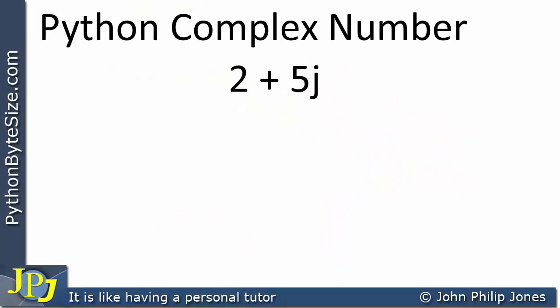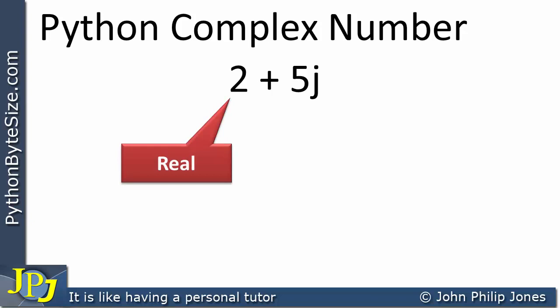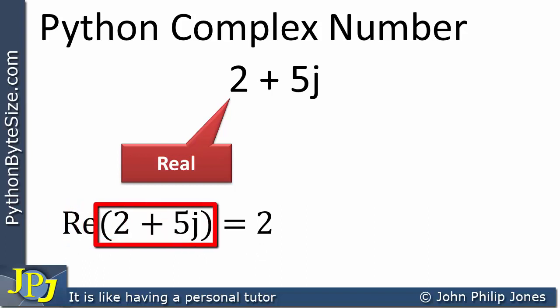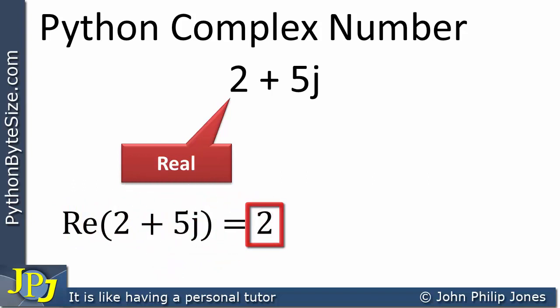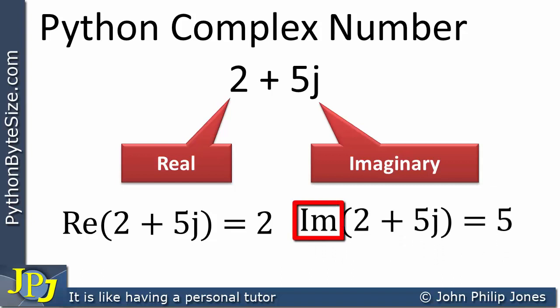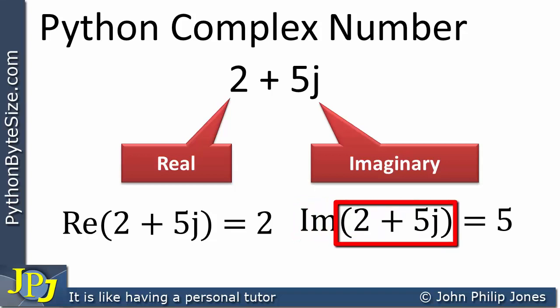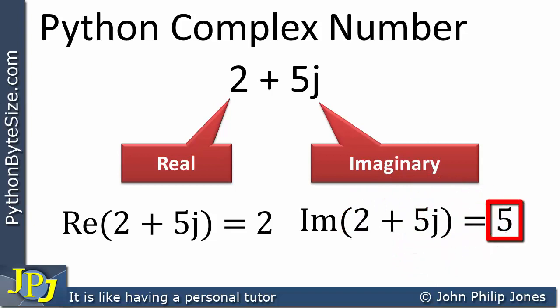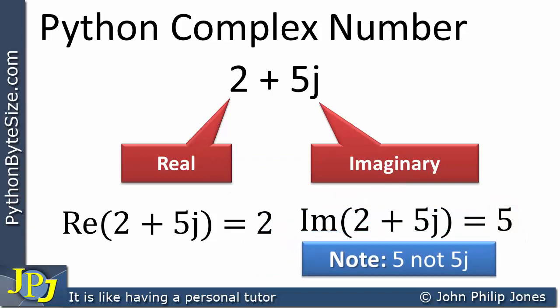Mathematically, you will often see the real component pointed out as Re of the complex number, shown here as equal to 2. The imaginary part is written as Im, an abbreviation for imaginary, and you can see it is 5. It is not usual to regard the imaginary part as being 5j — the j tells us it's the imaginary part, but the value is 5, not 5j.